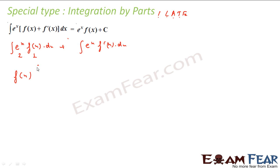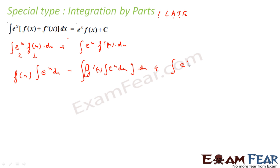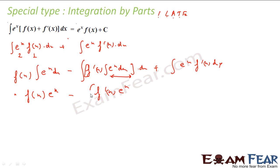Taking f(x) as first function, my equation is f(x)·∫e^x dx minus ∫[f'(x)·∫e^x dx] dx, plus ∫e^x·f'(x) dx. This becomes f(x)·e^x minus ∫f'(x)·e^x dx plus ∫e^x·f'(x) dx. If you see, both these terms are the same, so they cancel out.